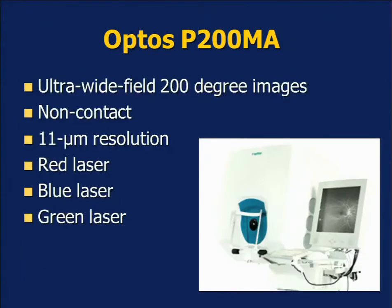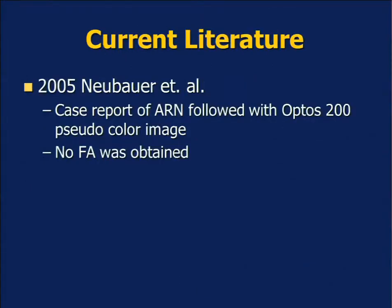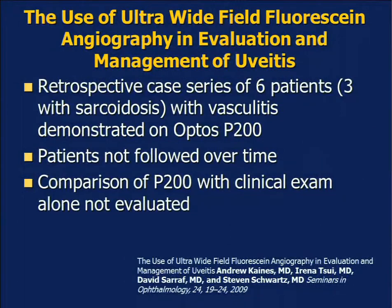We have been studying and investigating the P200 system that many of you in the room have. This is the ultra-wide 200-degree imaging system — a non-contact device applying three different colors of laser: red, blue, and green. In the current literature since 2005, there have been case reports of acute retinal necrosis using an early model of this OPTOS 200. Subsequently, there are case series of about six patients with sarcoidosis and vasculitis demonstrated by the wide-angle system. However, in that case series, patients were not followed over time, and comparison with the P200 versus clinical examination alone were not evaluated.